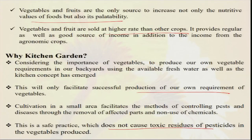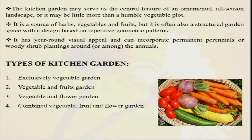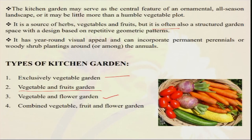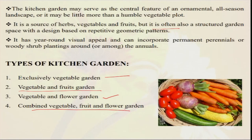This is a safe practice that does not cause toxic residue, so we get good quality residue-free food. The kitchen garden can serve as an ornamental all-season landscape, and can be a source of vegetables and fruits, as well as floriculture for aesthetic value. Different types of kitchen gardens exist — exclusively vegetable garden for a four or five family member household, or combined vegetable and fruits. Fruit trees like papaya or lemon — which is needed every day and is very high in vitamin C — can be grown in the kitchen garden. You can also mix in flowers for daily puja and aesthetic value, combining all three — vegetable, fruit, and flower.